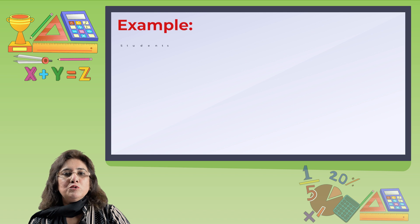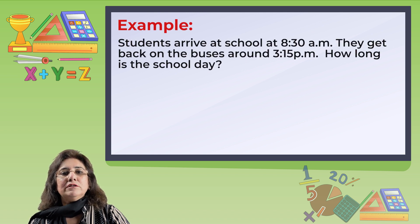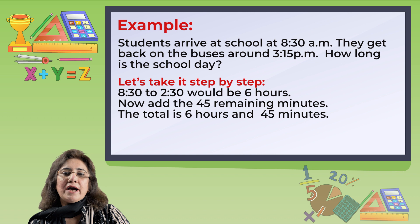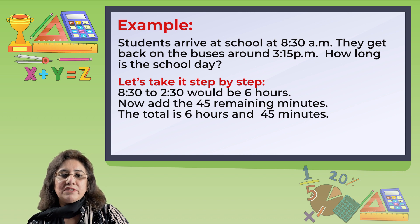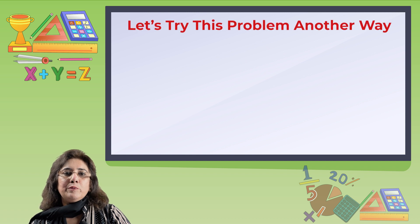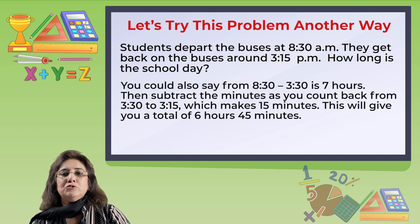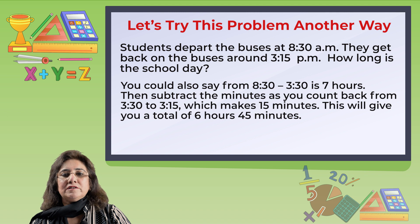Students arrive at school at 8:30 a.m. and get back on the buses around 3:15 p.m. How long is the school day? Step 1: 8:30 to 2:30 would be 6 hours. Step 2: add the 45 remaining minutes. Step 3: the total is 6 hours and 45 minutes. Another way: from 8:30 to 3:30 is 7 hours, then subtract 15 minutes counting back from 3:30 to 3:15, giving a total of 6 hours and 45 minutes.